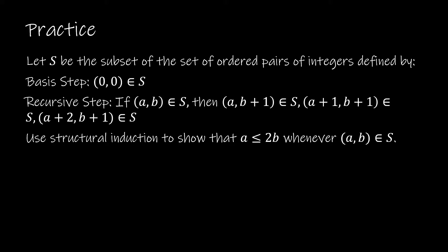Let's look at our first example, picking up right where we left off. Our recursive definition has a basis step of (0, 0) and a recursive step that tells us how to find new elements. We want to prove our conjecture from video 5.3.1: that the value of a in an ordered pair that is an element of S is going to be less than or equal to 2 times b.